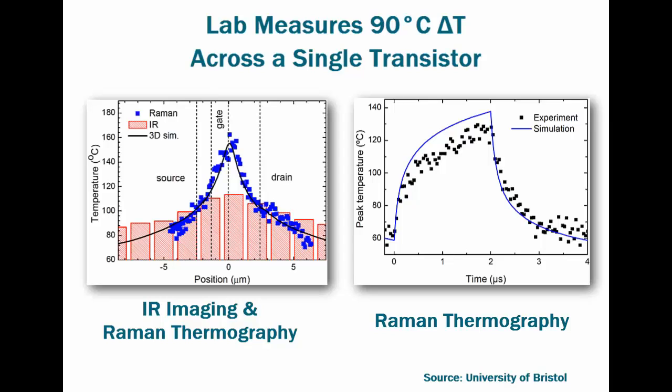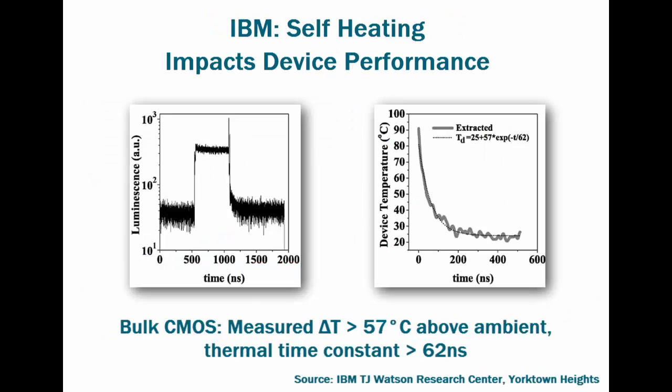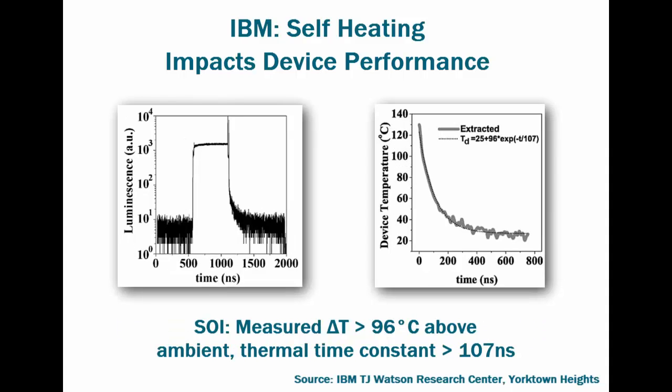Those measurements were made on a compound semiconductor chip — how about CMOS? Researchers at IBM's T.J. Watson Research Center at Yorktown Heights used photon emission microscopy to count time-resolved single photons with sub-nanosecond accuracy. They continuously pulsed an N-FET gate in a 180 nanometer bulk CMOS process and measured a junction temperature about 60 degrees C above ambient, with a thermal time constant of about 60 nanoseconds. In a 180 nanometer SOI process, they also measured junction temperatures near 100 degrees Celsius above ambient, with a thermal time constant around 100 nanoseconds. The insulating effect of the buried oxide layer causes SOI temperatures to be higher and to change more slowly than in the bulk CMOS case.